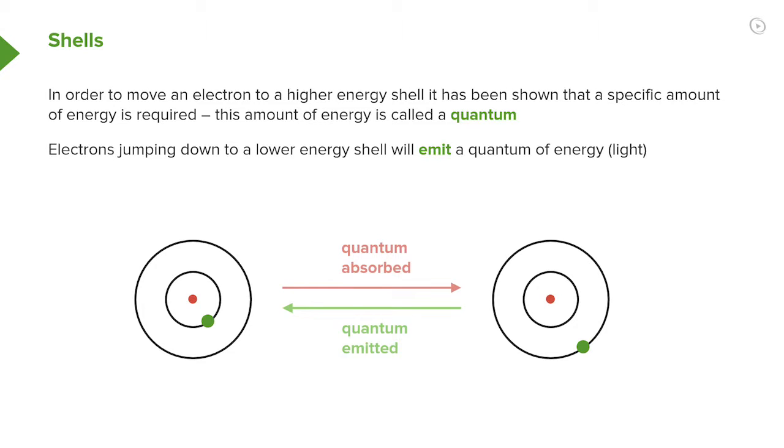In order to move an electron to a higher energy shell, which is analogous to a person moving from one step to the other, a specific amount of energy is required. That energy is called the quantum energy. This is the small amount of energy required to move a particle from a specific distance away from a proton to the next distance away from the proton.